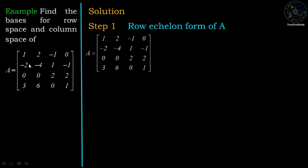Now in the row echelon form of matrix A, in the first column, except the first entry, all other entries should be 0. So first we apply the row operation: multiply the first row by 2 and add it to the corresponding entries of the second row.